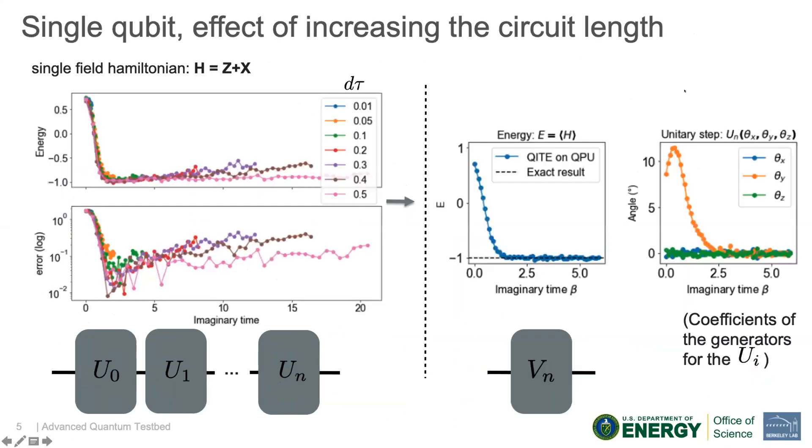So we did this first, as is done in the Caltech paper, for a single qubit. Here the Hamiltonian, the single field Hamiltonian Z plus X.